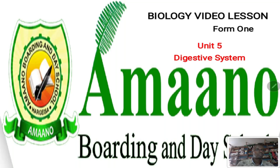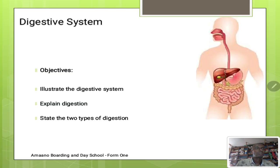Bismillahirrahmanirrahim. Today we are going to start our first biology video lesson. This is from Form 1, Class Unit 5, Chapter 3: The Digestive System. In our previous lessons we learned that the human body consists of organ systems, including the digestive system. The digestive system, as you can see from the diagram, consists of a number of organs.